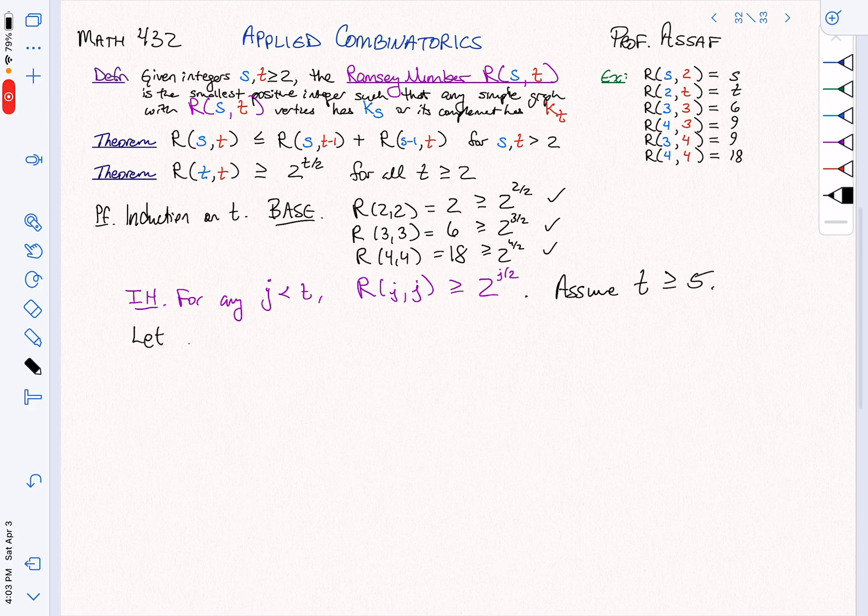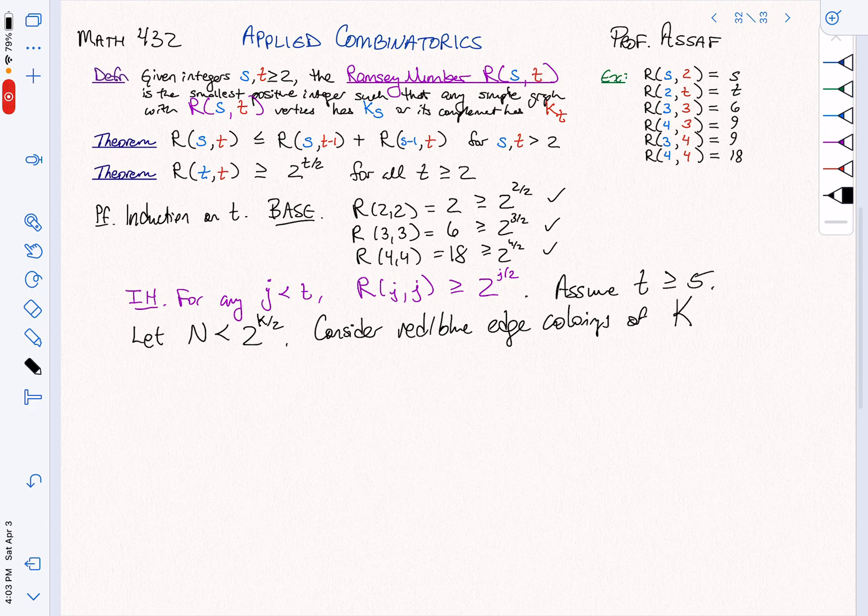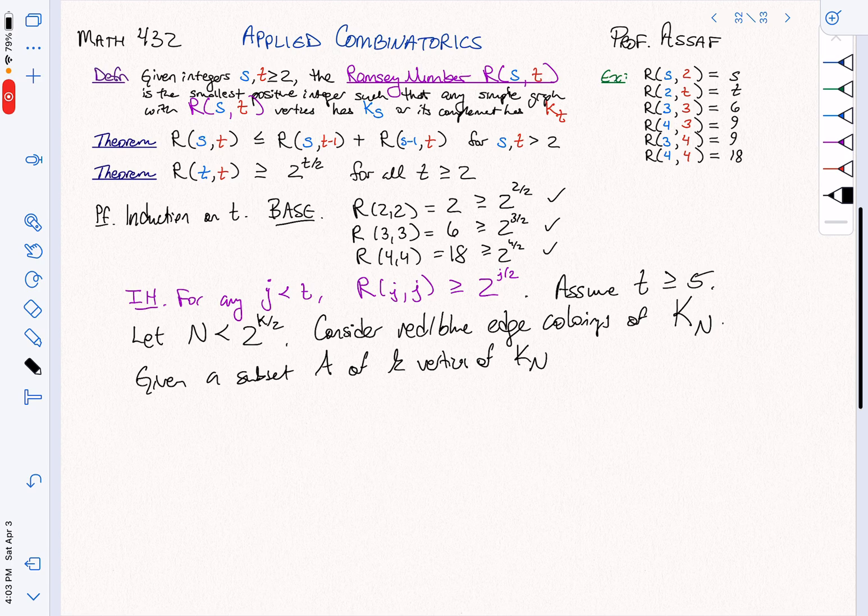We're going to think about this probabilistically. So we're going to let N be any number that's less than 2 to the K halves. And we're going to consider red, blue edge colorings of the complete graph on N vertices.